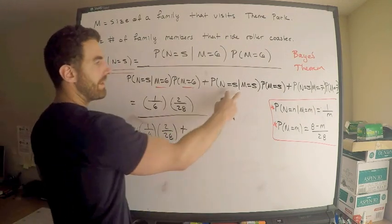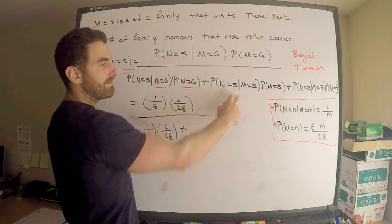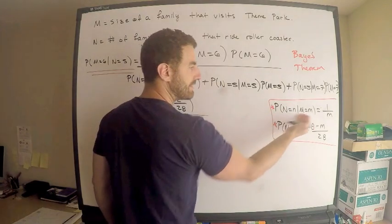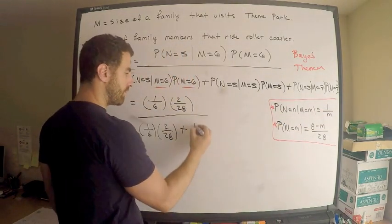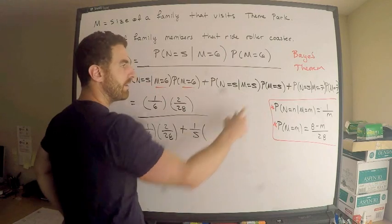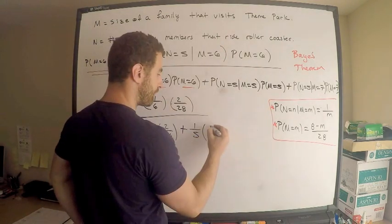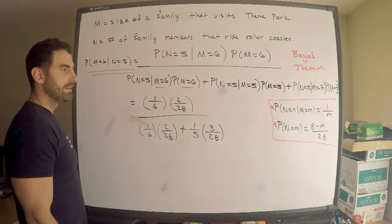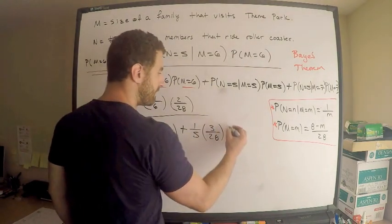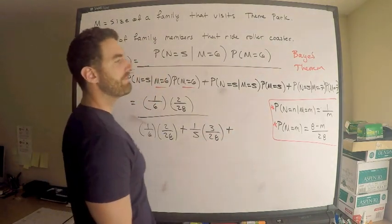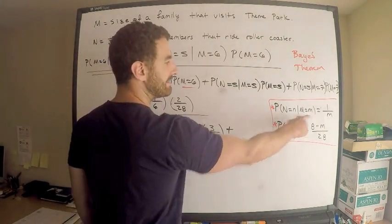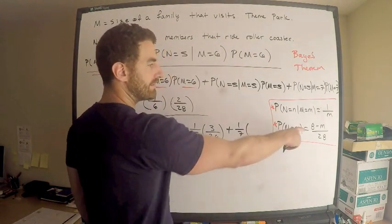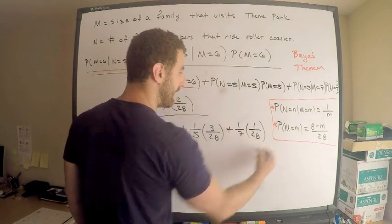And now what do I have? Well, probability N is five given M is five. So look at my mass function, my conditional mass function. Just replace M with five. Done. So one over five. Now probability M is five. Look over here, this is 3 over 28. And then plus probability N is five given M is seven, so one over seven. And when I plug in seven here it looks like 1 over 28.